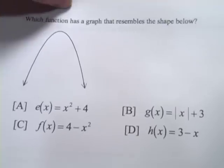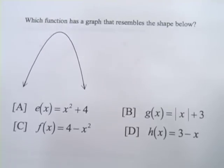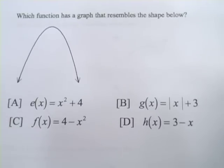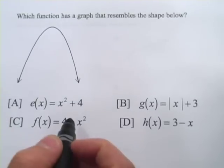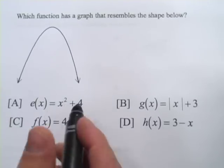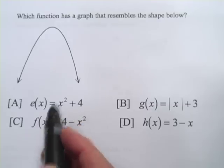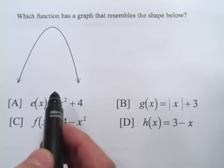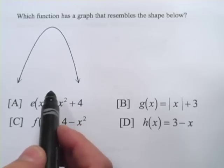All right, last one. It says which function has a graph that resembles the shape below. And this is a shape that might confuse you at first, because you're probably used to seeing it pointing in the other direction. This is a u shape, and that is some kind of quadratic,